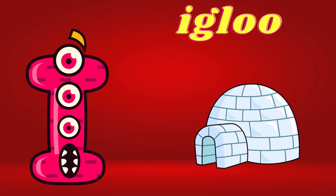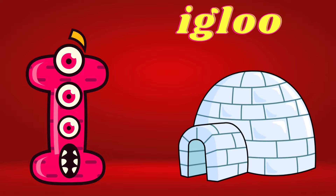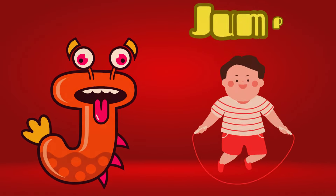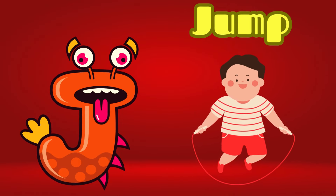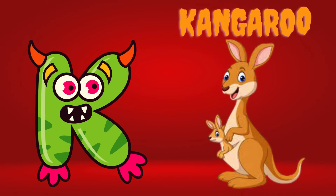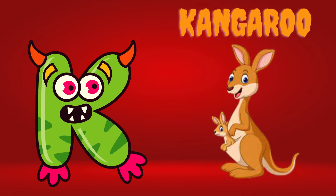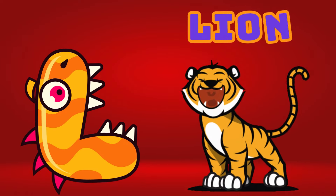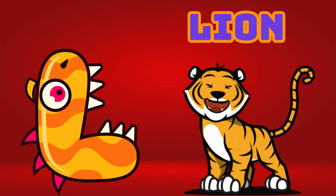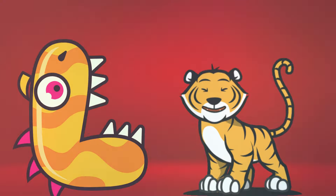I is for Igloo, I-I-Igloo. J is for Jump, J-J-Jump. K is for Kangaroo, K-K-Kangaroo. L is for Lion, L-L-Lion.